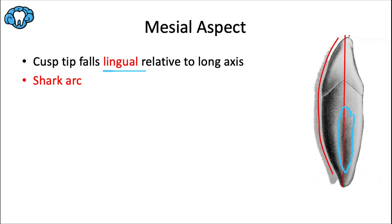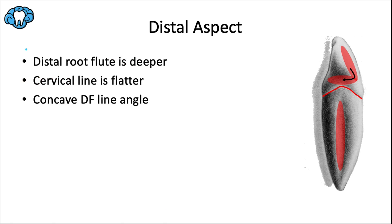Comparing the distal aspect to the mesial aspect: the distal developmental depressions are deeper, the CEJ or cervical line is flatter, and we have a concave distal facial line angle — similar to the concavity near the cervical line of the maxillary canine — causing a large gingival embrasure.